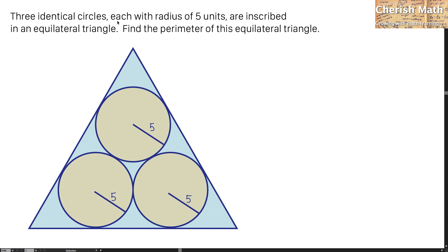Three identical circles, each with a radius of 5 units, are inscribed in an equilateral triangle. Find the perimeter of this equilateral triangle.